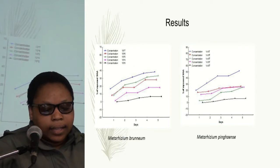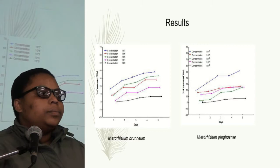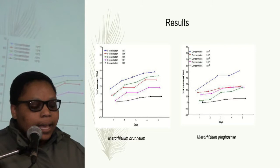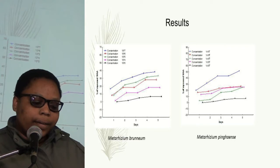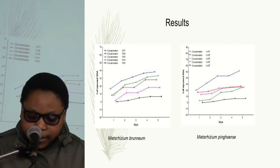These two graphs show how the woolly apple aphid responds to treatment with Metarhizium brunneum and Metarhizium pingshaense under different concentrations. Here you can see that Metarhizium pingshaense seems to show greater potential relative to Metarhizium brunneum in controlling the woolly apple aphid.